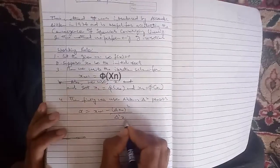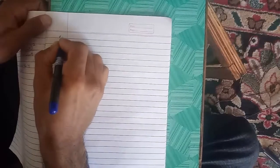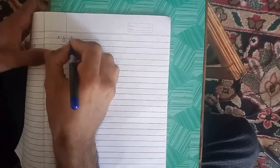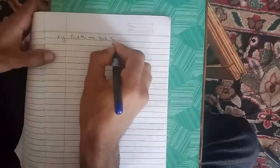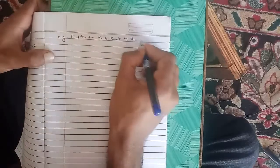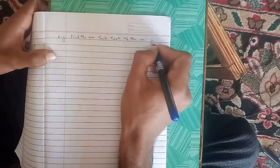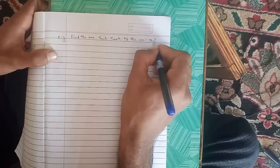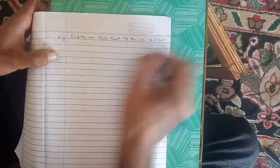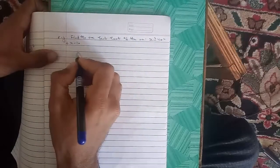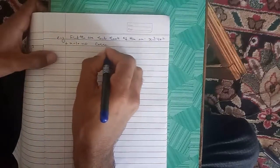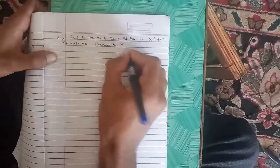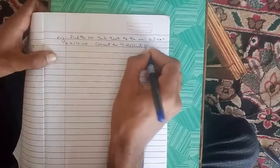Example: Find the positive real root of the equation x³ - 4x² + x - 10 = 0, correct to 4 decimal places.